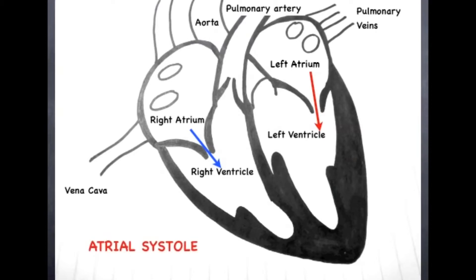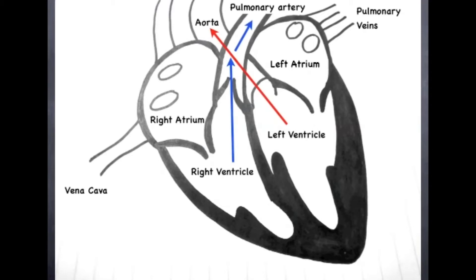Once the blood is in the ventricles, the ventricles contract. This pushes the blood out of the heart. The contraction of the ventricles is called ventricular systole.